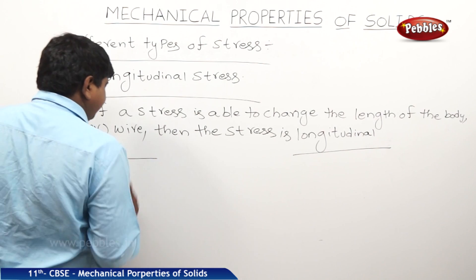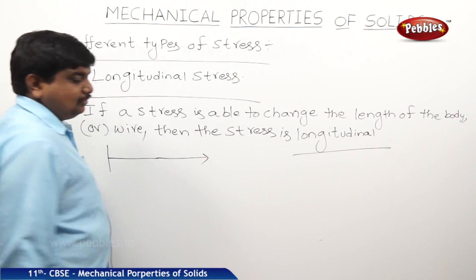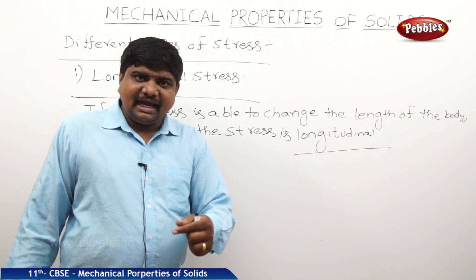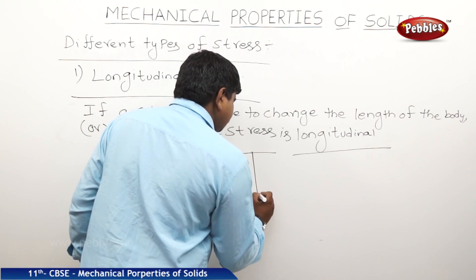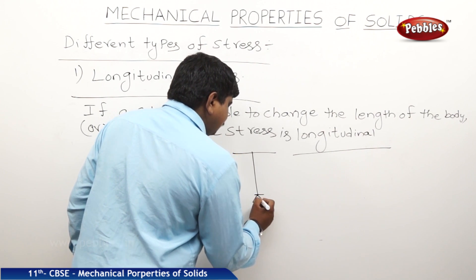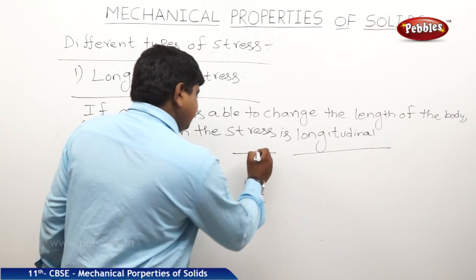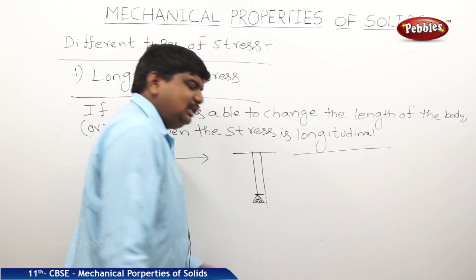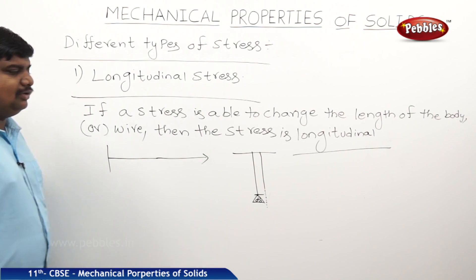A best example: take a body which is fixed at one end, and at the second end if you apply a force to expand it. Or if a metal wire is freely hanged and on the other end you apply a load continuously, there may be expansion of the wire. The expansion will take place — meaning only the length of the body is changing. That is why this is called longitudinal stress.